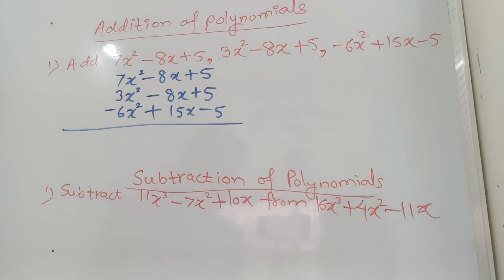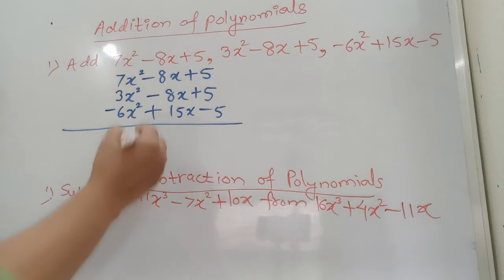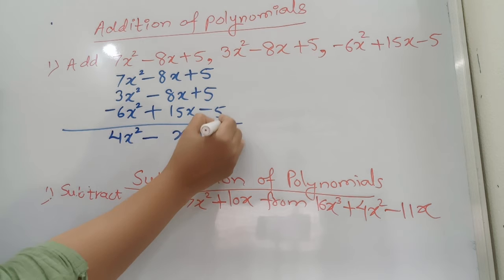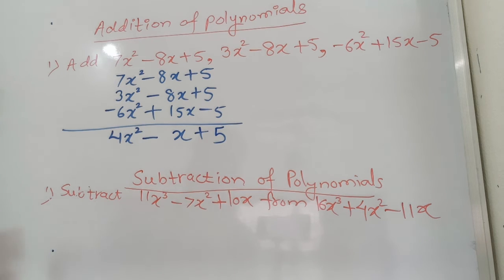Here you can see 7 plus 3, 10, and minus 6 is nothing but 4, so it'll be 4x². Now carefully see minus 8 minus 8 gives you minus 16, plus 15 will give you minus x or you can say -1x. Now plus 5 plus 5 is 10, 10 minus 5 is 5. So the resulting expression is 4x² - x + 5.